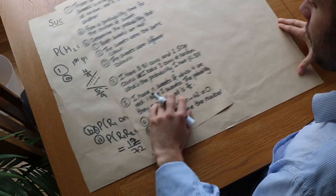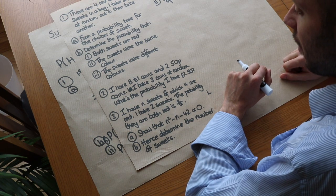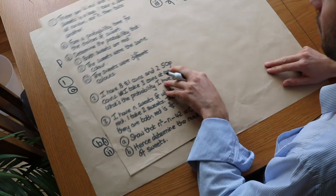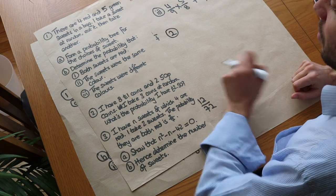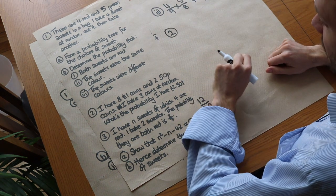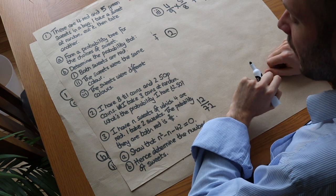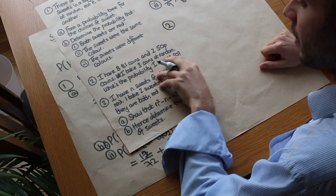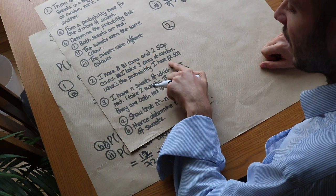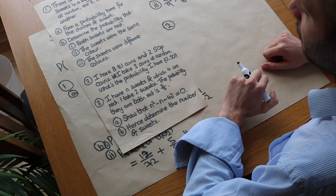Now question 2: I have eight £1 coins and two 50p coins. I take three coins at random. What's the probability I have £2.50? I advise avoiding drawing a full tree here. If you can, just list out the possibilities that give the desired total.